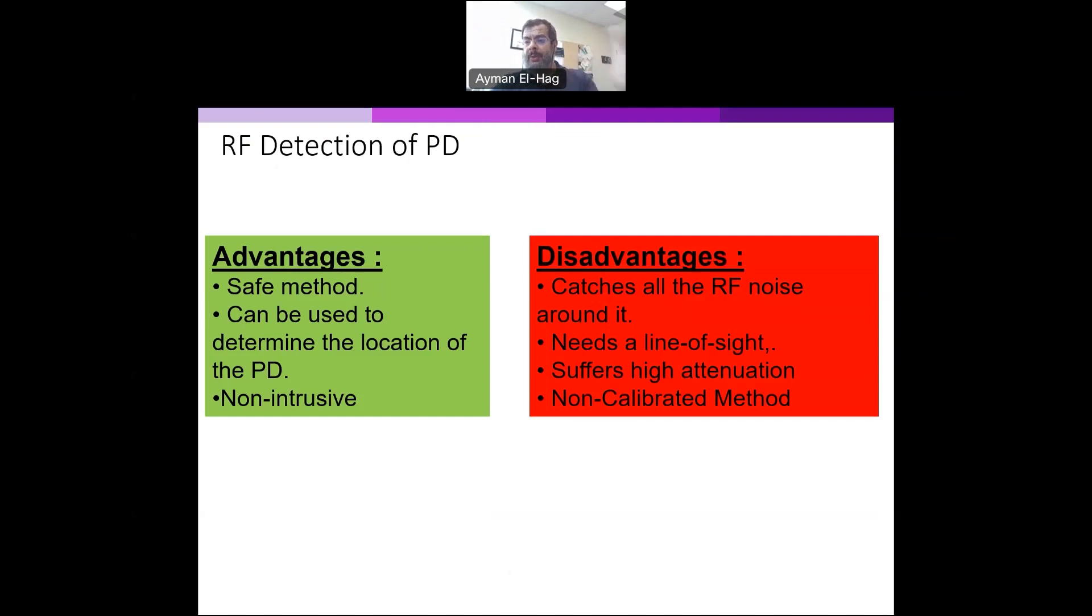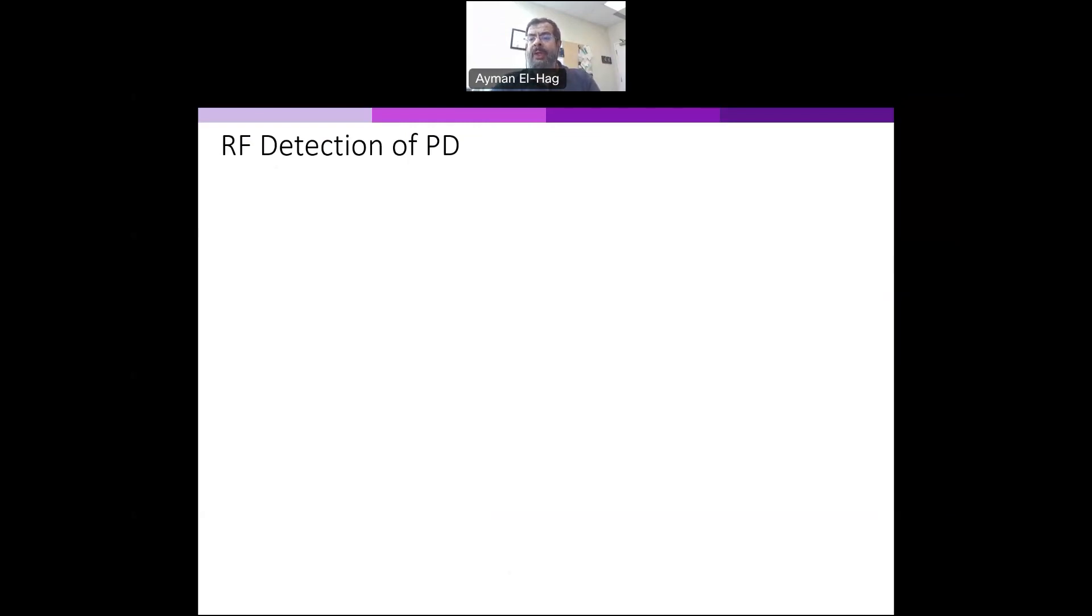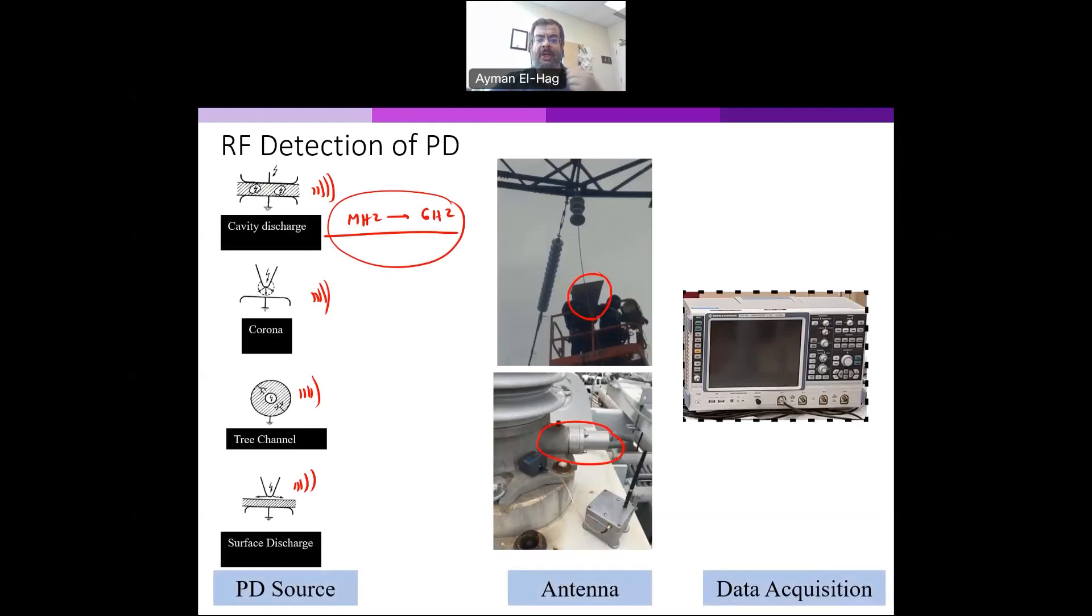So now please join me, I will go to the lab, and we will try to basically produce a partial discharge. We will use corona. The source doesn't really matter. The objective is just to show you the whole process. And I will use an antenna, a horn antenna like this one. Okay? And I will use an oscilloscope.